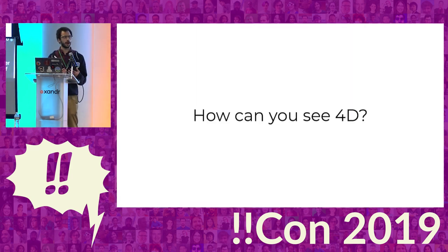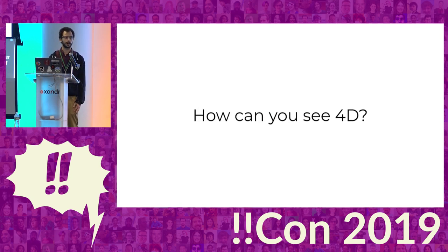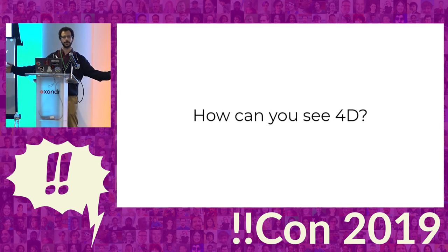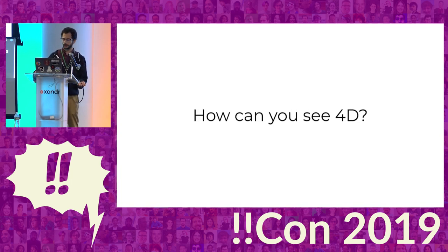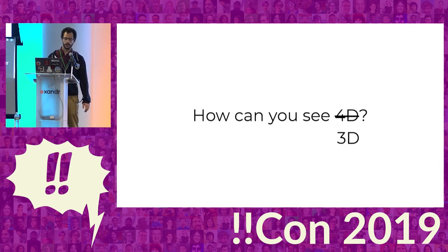How do you even begin to think about how you see a four-dimensional object? We're stuck in this three-dimensional world — there's no way I can point to a fourth direction that isn't included in our space. So we can start with a simpler question: how do we see 3D, how do we see the world around us?